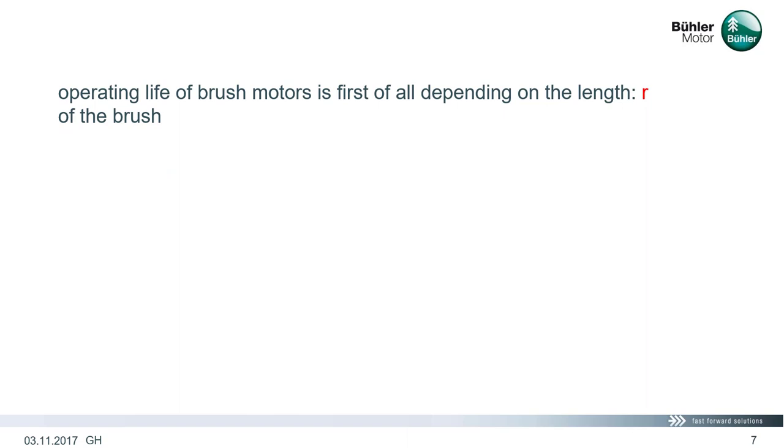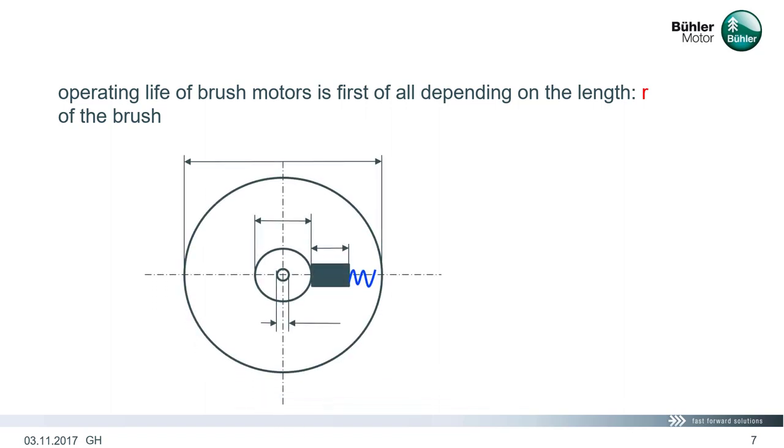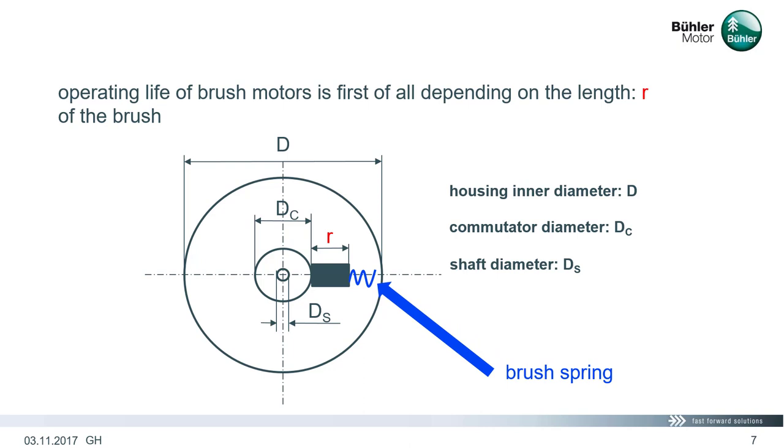As we talk about existing motors when we do application engineering, the motor design is given and the operating life is depending on the length of the brush. A quick look at the cross-section of the motor shows the brush lengths are within the motor design. Other elements are the housing diameter D, the commutator diameter DC and the shaft diameter DS. All these elements together with the used spring design determine the possible lengths of the brush in the system.